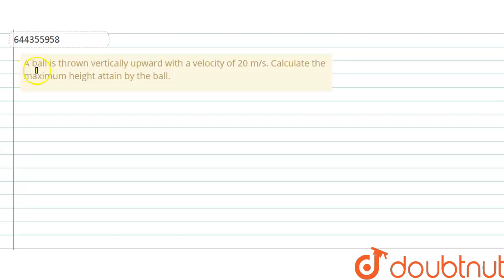Hello everyone, let me explain this question to you. A ball is thrown vertically upward with velocity 20 meter per second. Calculate the maximum height attained by the ball.